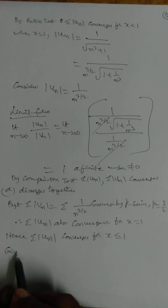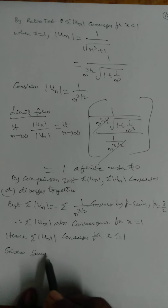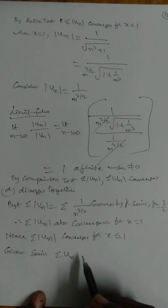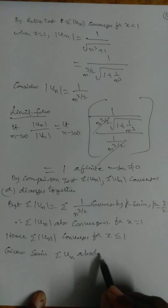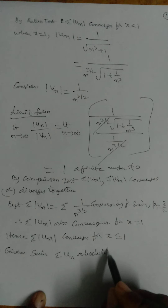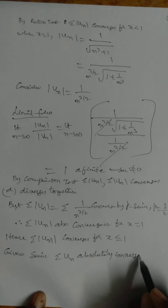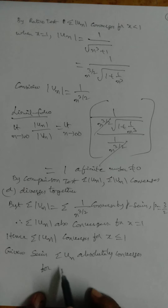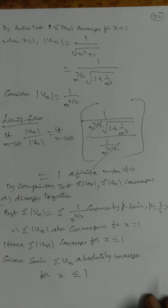Therefore the given series σu_n converges absolutely for |x| ≤ 1.